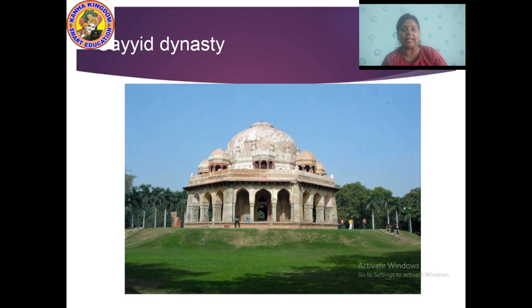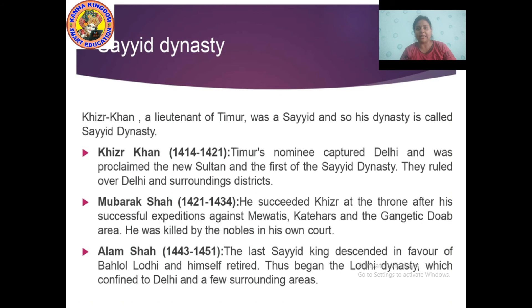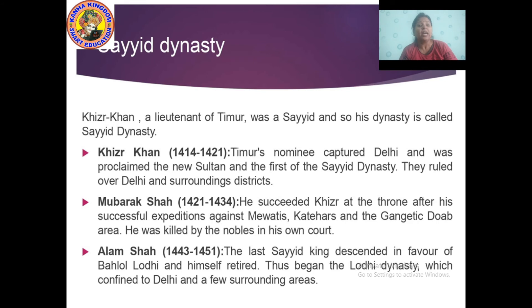Now coming to the Sayyid dynasty, which was introduced by Khizr Khan. Khizr Khan was said to be a lieutenant of Timur, and since he was a Sayyid, this dynasty was known as the Sayyid dynasty. Khizr Khan, Timur's nominee, captured Delhi and was proclaimed the new Sultan and first ruler of the Sayyid dynasty. He ruled from 1414 to 1421, ruling over Delhi and its surrounding districts.